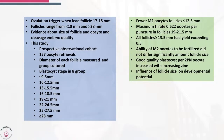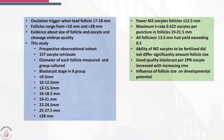Ovulation trigger was given when the lead follicle was 17 to 18 millimeters. Follicles ranged from less than 10 millimeters to more than 28 millimeters, which is what we normally see. There is existing evidence about follicle size and oocyte quality, maturity, and cleavage embryo quality, but we don't have much data on what happens with blastocyst culture. This is a prospective cohort observational study of 157 oocyte retrievals.